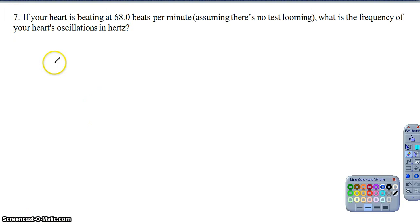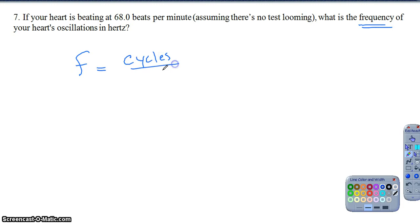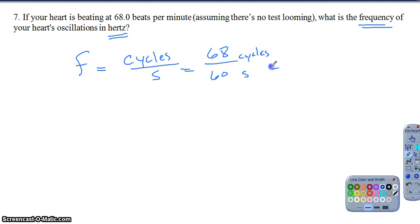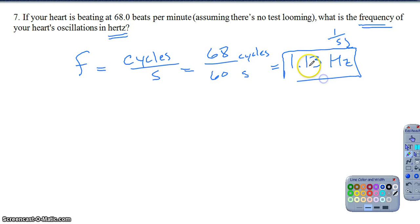Question 7: if your heart beats 68 beats per minute, what is the frequency in hertz? Frequency is cycles per second, and hertz means cycles per second. We have 68 cycles per minute, and one minute equals 60 seconds. Dividing 68 by 60 gives 1.13 hertz. This is a straightforward application of understanding frequency — interpreting context and recognizing that beats per minute just needs to be converted to cycles per second.